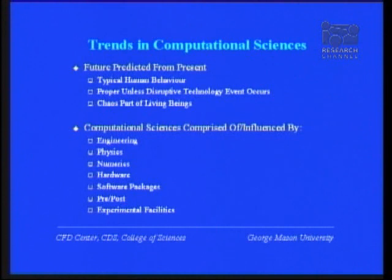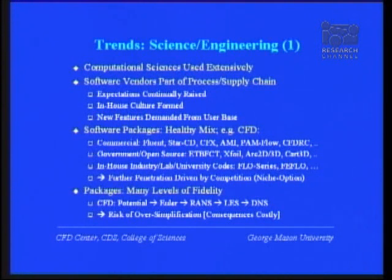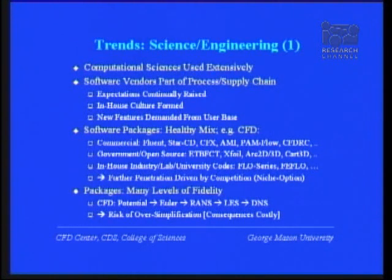What are the trends in science and engineering? Computational sciences are used extensively; software vendors are now part of the process and supply chain. If you're at Ford, you're continuously expecting new CFD, structural, and thermodynamics software to help design the next car, and as a user you are continuously pushing these vendors with your demands — it's a symbiosis by now.